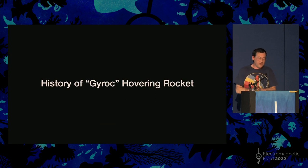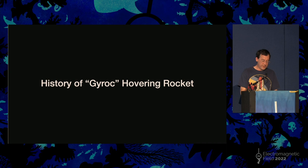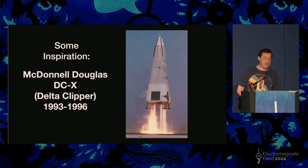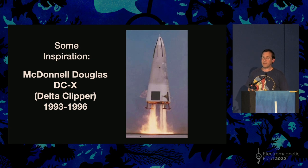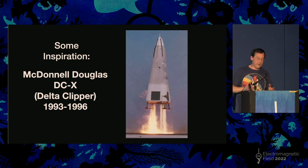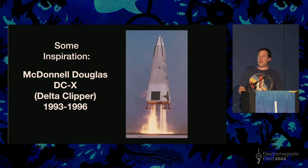A bit of history on how this project started — when I was a student, or just moving into my first job at a university, I was really inspired by the Delta Clipper, the McDonnell Douglas DCX, which then became part of a NASA program. It sadly didn't go very far; they had a couple of accidents. But the essential design was very sound — a rocket that could take off, move sideways, and land on a pad. It was a technology demonstrator built very quickly in a cost-effective manner — a really good example of how to run a quick, cheap aerospace program that does something amazing.